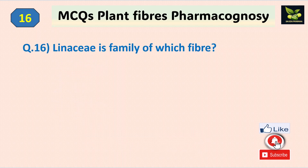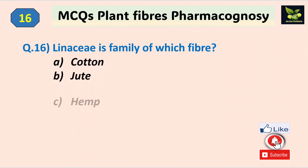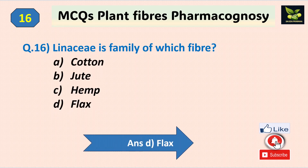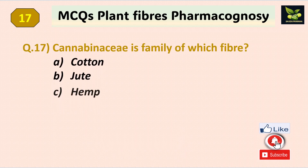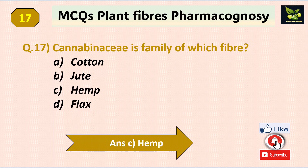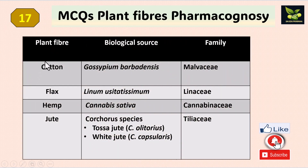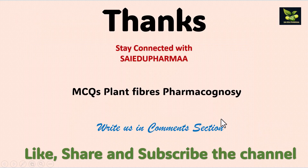Question fifteen: Linaceae is the family of which fiber — cotton, jute, hemp, or flax? The answer is flax. Question sixteen: Cannabinaceae is the family of which fiber? Cannabis sativa is the biological source of hemp, so the answer is hemp. This summary slide shows: cotton family is Malvaceae, flax is Linaceae, hemp is Cannabinaceae, and jute is Tiliaceae. Thank you — stay connected with SciAview Pharma and write in the comment section which topic you want videos on.